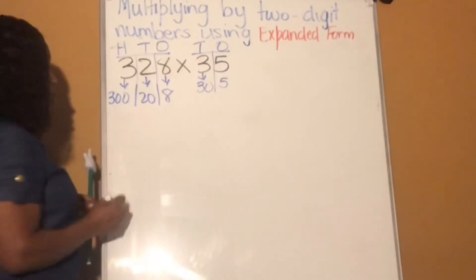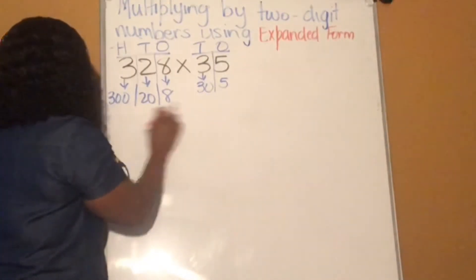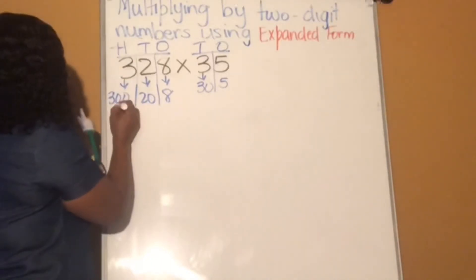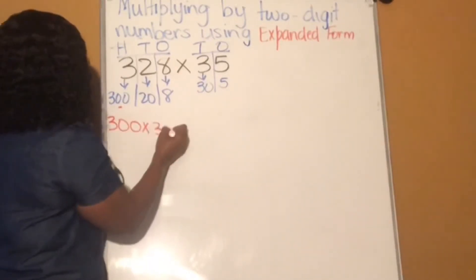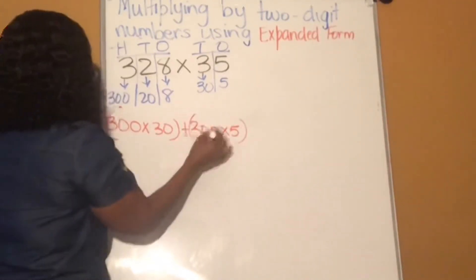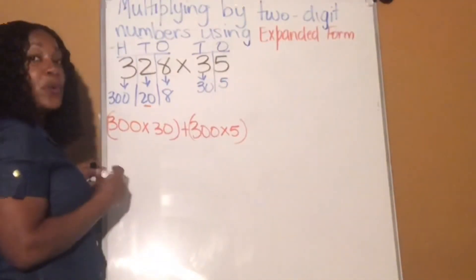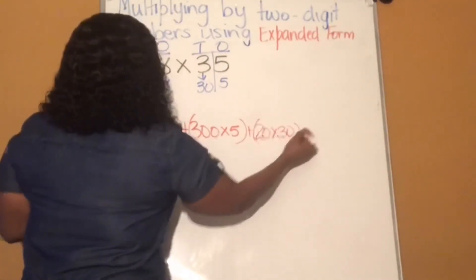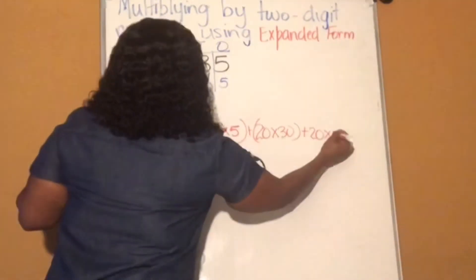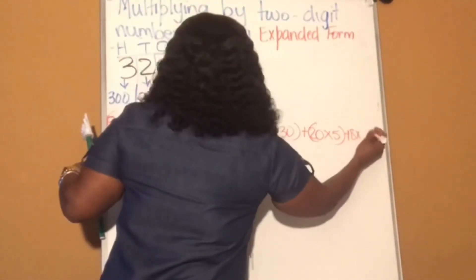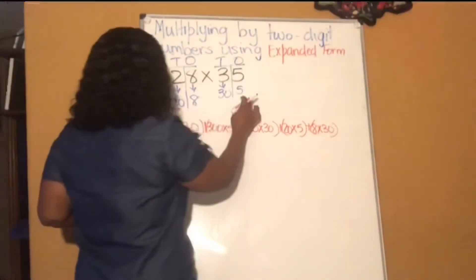Alright. Now we are going to write them out based on how we're going to multiply. All 3 numbers will be multiplied by these 2. So we're starting with 300 and we're multiplying by those 2. So 300 times 30 bracket plus 300 again times 5. We're done with 300. So now we're going to 20. So we have 20 times 30 bracket plus 20 times 5. Now we're done with 20. So now we're going to 8. Plus 8 times 30 plus 8 times 5.